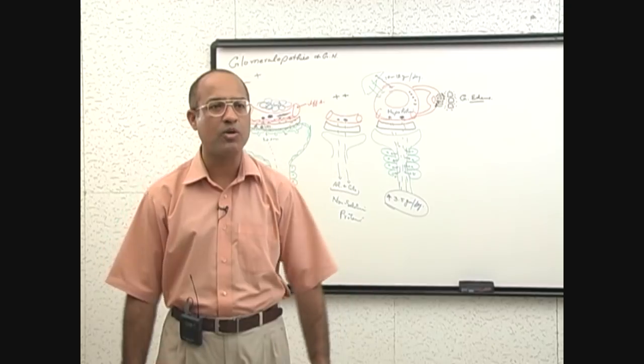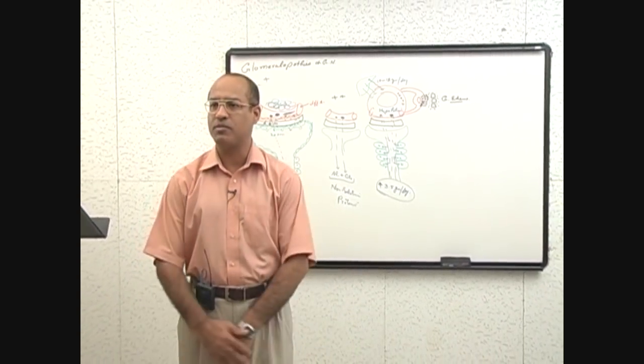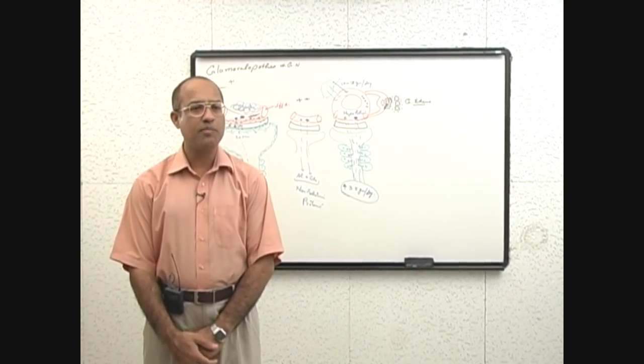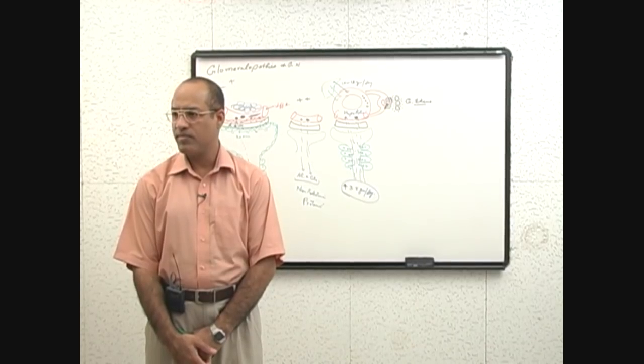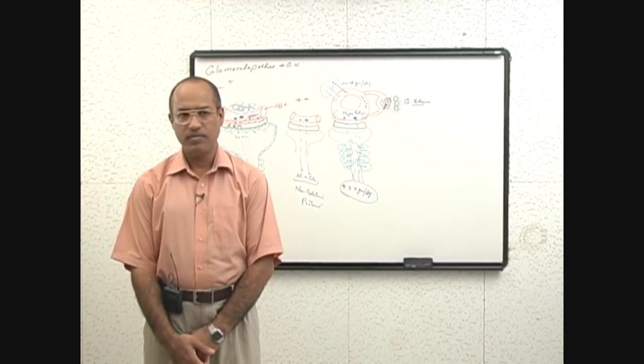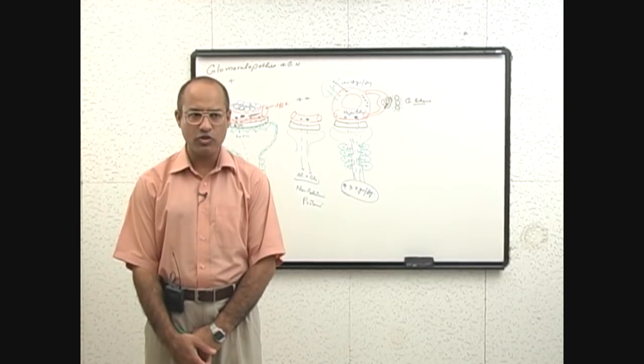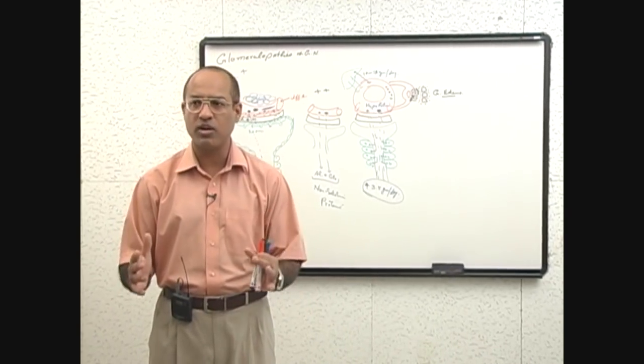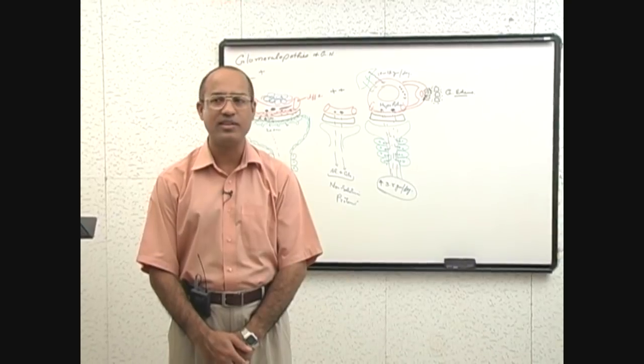Later on it will become all over the body and this edema will be more in the dependent part of the body. Why does it start, why is it more in the periorbital region? Mechanism of edema you know: there is less osmotic pressure due to low plasma proteins, so fluid is excessively lost from vascular compartment to interstitial compartment and edema is developing all over the body.